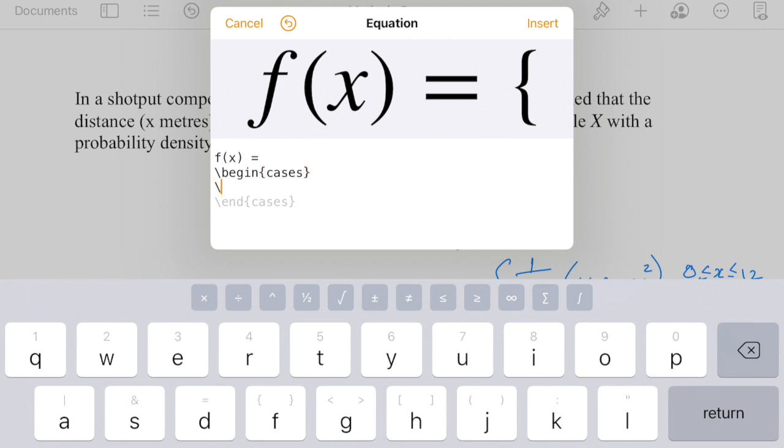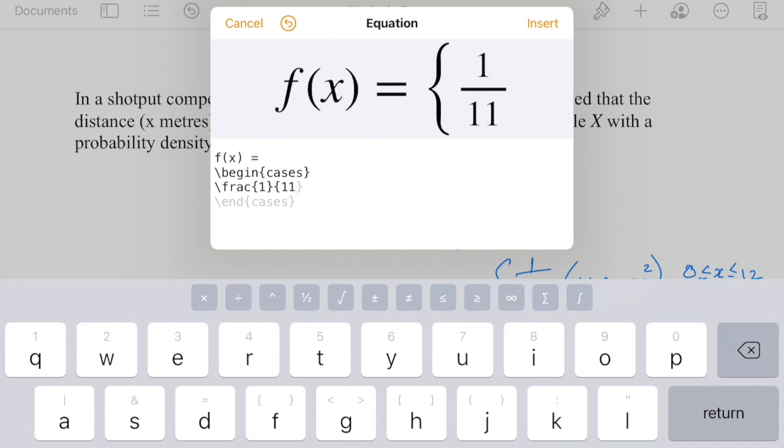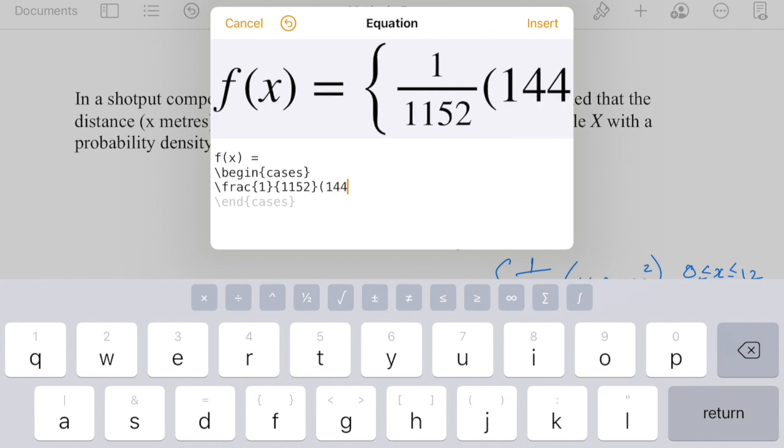First of all a fraction, backslash frac, and the two arguments: one over 1152. Some parenthesis and 144 minus x squared.